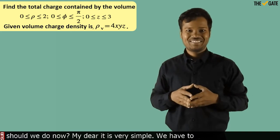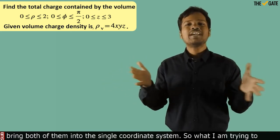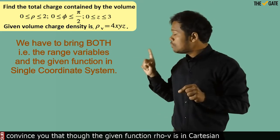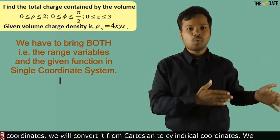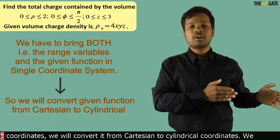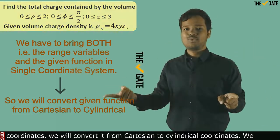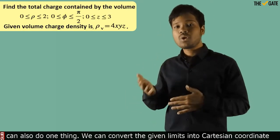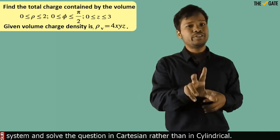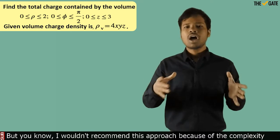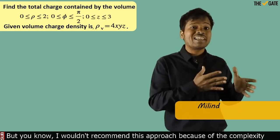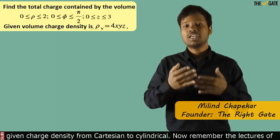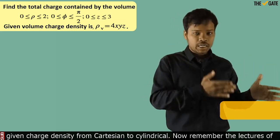It is very simple — we have to bring both into a single coordinate system. Though the given function ρv is in Cartesian coordinates, we will convert it from Cartesian to cylindrical coordinates. We could also convert the given limits into Cartesian and solve the question in Cartesian rather than cylindrical, but that approach is not recommended because of the complexity involved.